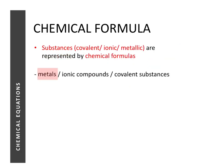Now let's do a quick revision of writing chemical formulas, because before we can write chemical equations we need to write chemical formulas well. Different substances are represented by chemical formulas — covalent, ionic, or metallic. We'll start with metals, which is the easiest: the chemical formula for a metal is simply the same as its chemical symbol.